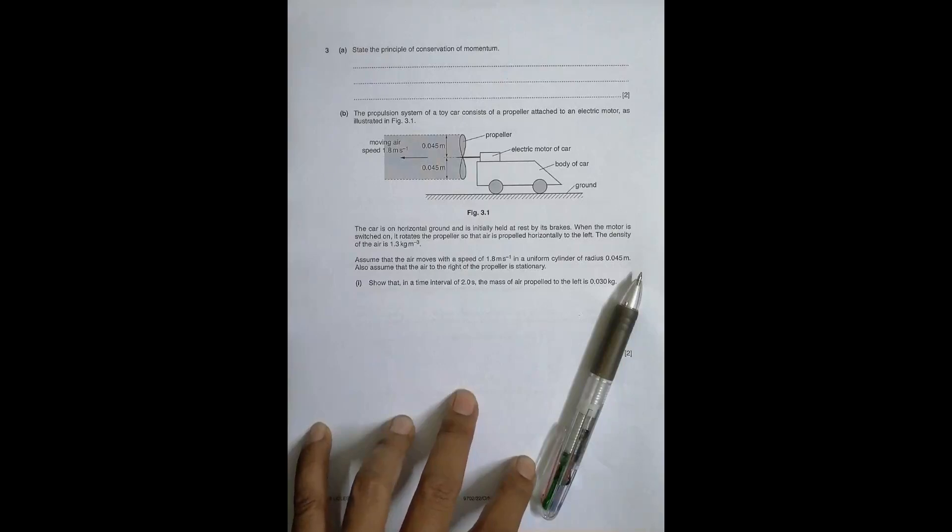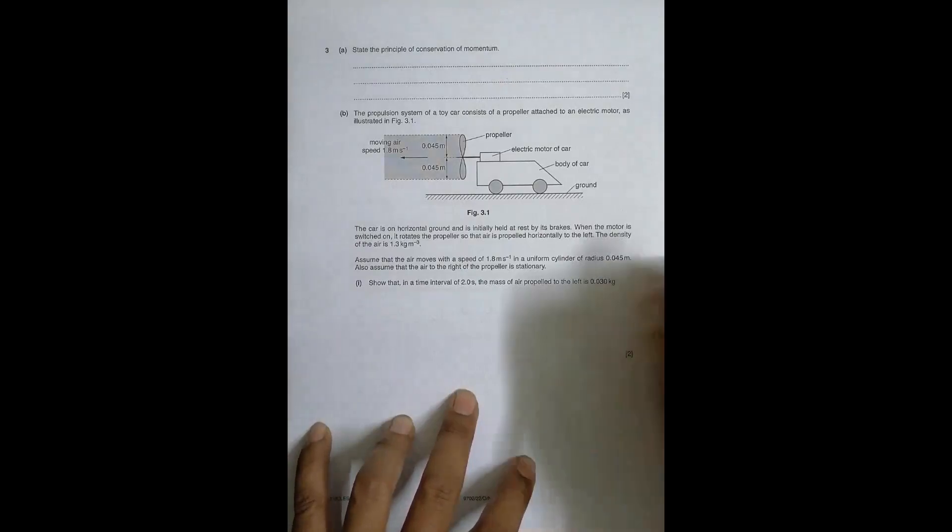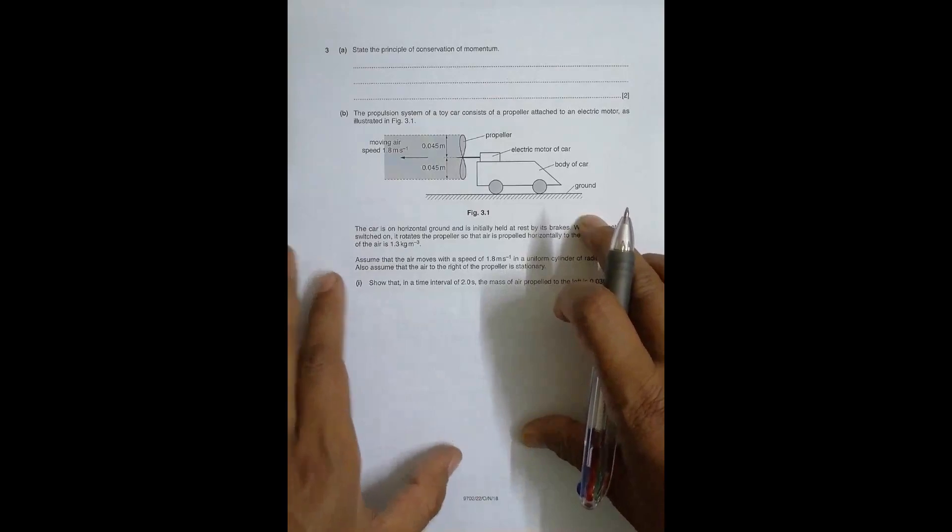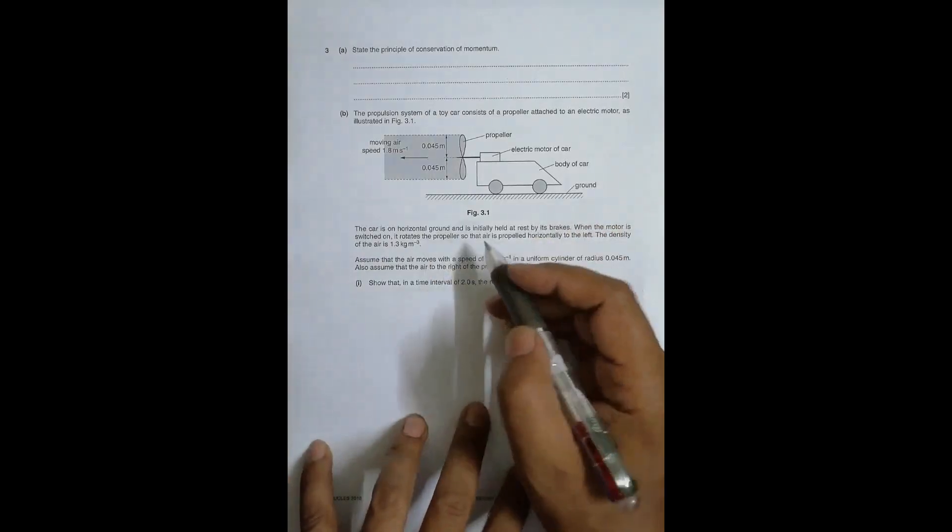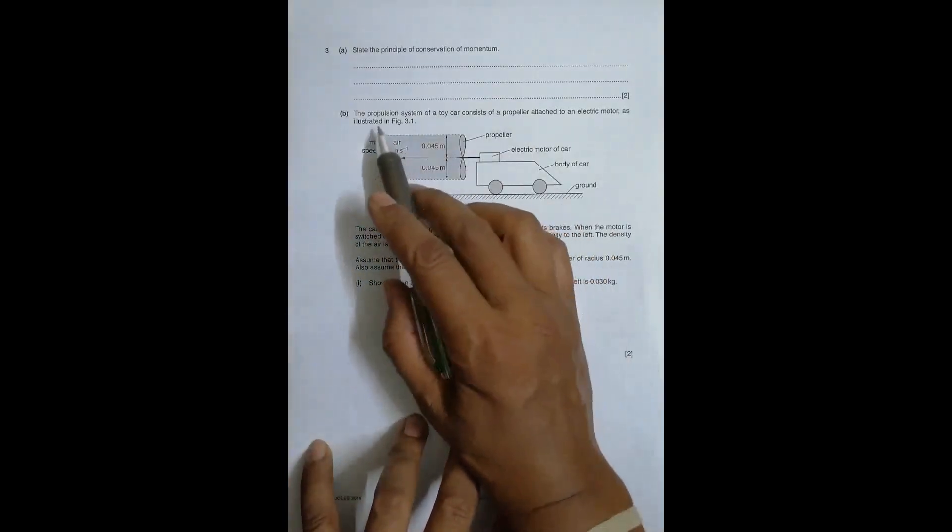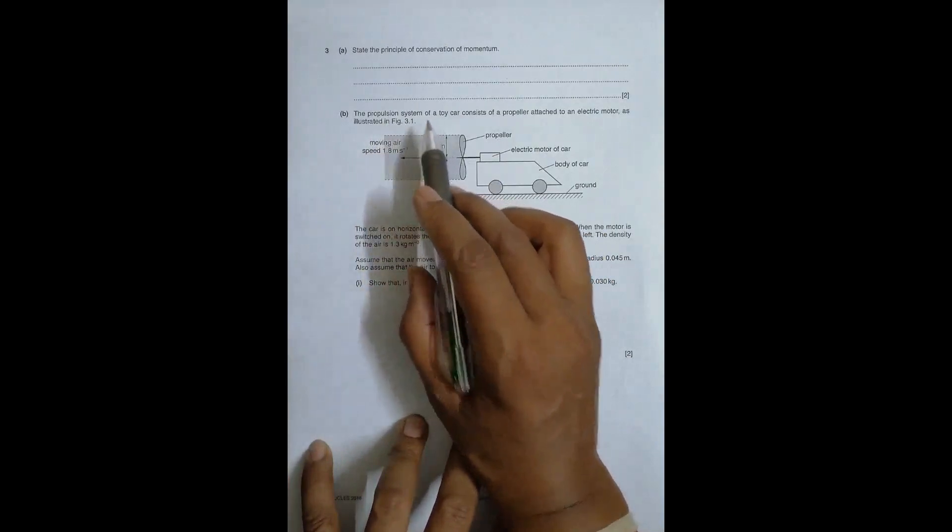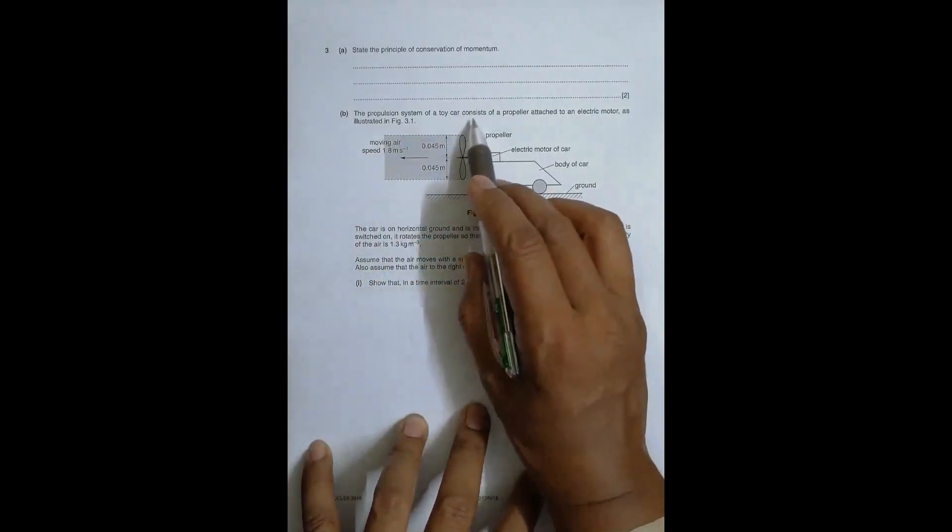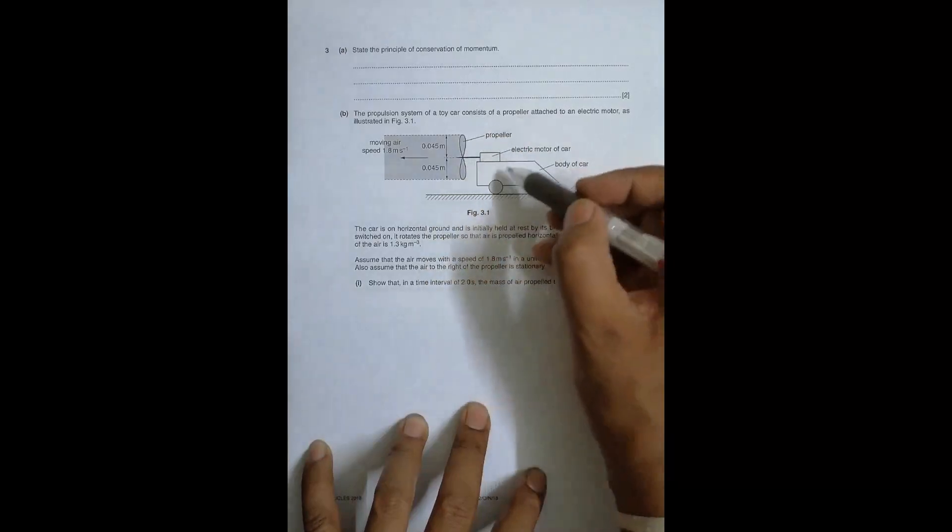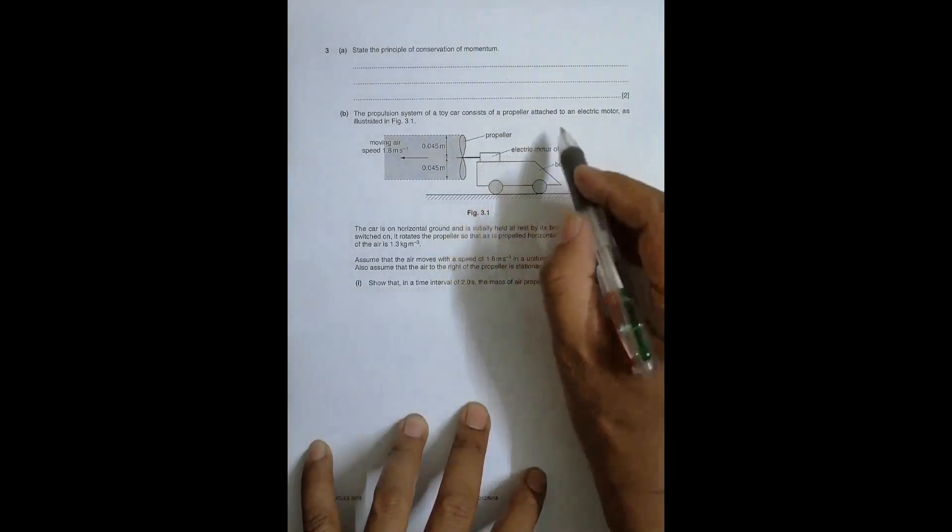Now in the next question it has a figure here. The propulsion system, meaning pushing system, of a toy car. The toy car consists of a propeller, a fan-like structure attached to an electric motor. This motor will operate the fan.